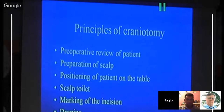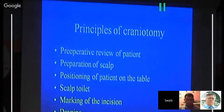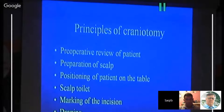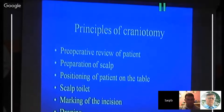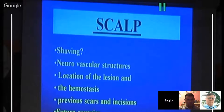The basic principles of craniotomy include: preoperative review of the patient, preparation of the scalp, and correct positioning of the patient on the table — improper positioning means you'll be bending yourself and in difficulty. Scalp preparation may use alcohol or povidone; preoperative baths vary by practice. Making the incision requires careful consideration, and draping must be adequate — too little draping forces you into an unsterile area, while too much exposes unnecessary areas. Regarding scalp shaving, evidence shows there is no increase in infections if you don't shave the whole head; a suture line or hairline shave is sufficient.